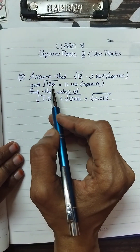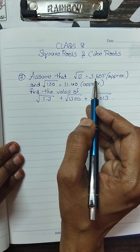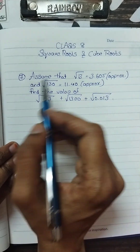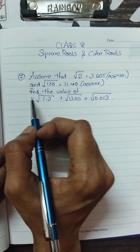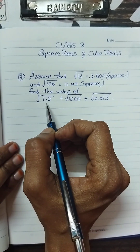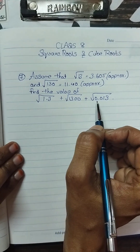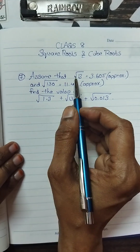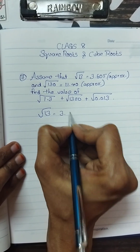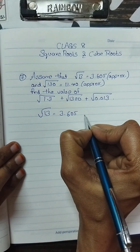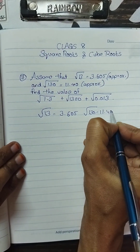Today's question: assume that √13 = 3.605 approximately and √130 = 11.40 approximately. Find the value of √1.3 + √1300 + √0.013. Given: √13 = 3.605 approximately and √130 = 11.40 approximately.